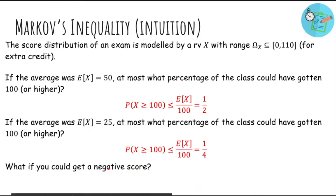But what if you could get a negative score? Then there's no bound, because you could have the vast majority of people get 100, but yet if someone gets like negative 1 trillion, then that could push the average way down below what is right.